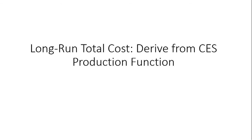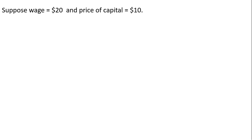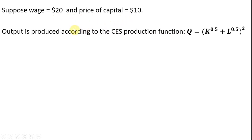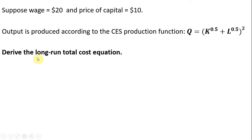Hello, we're going to look at deriving a long-run total cost equation from a CES production function. Suppose a firm faces a wage of $20 and a price of capital of $10. Output is produced according to the CES production function shown here, and we want to derive a long-run total cost equation given this information.